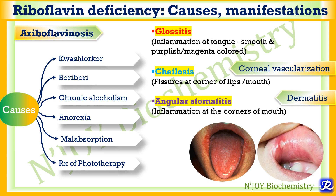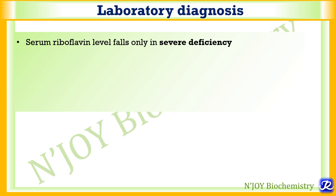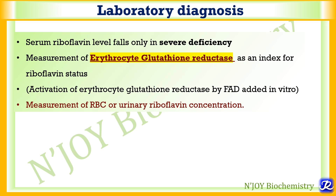There can also be corneal vascularization and dermatitis. Laboratory diagnosis of riboflavinosis includes serum riboflavin level estimation, which will be decreased in severe deficiency. Erythrocyte glutathione reductase is measured as an index for riboflavin status. The activation of erythrocyte glutathione reductase by FAD added in vitro is used for this measurement. Measurement of RBC or urinary riboflavin concentration can also be used for laboratory diagnosis.